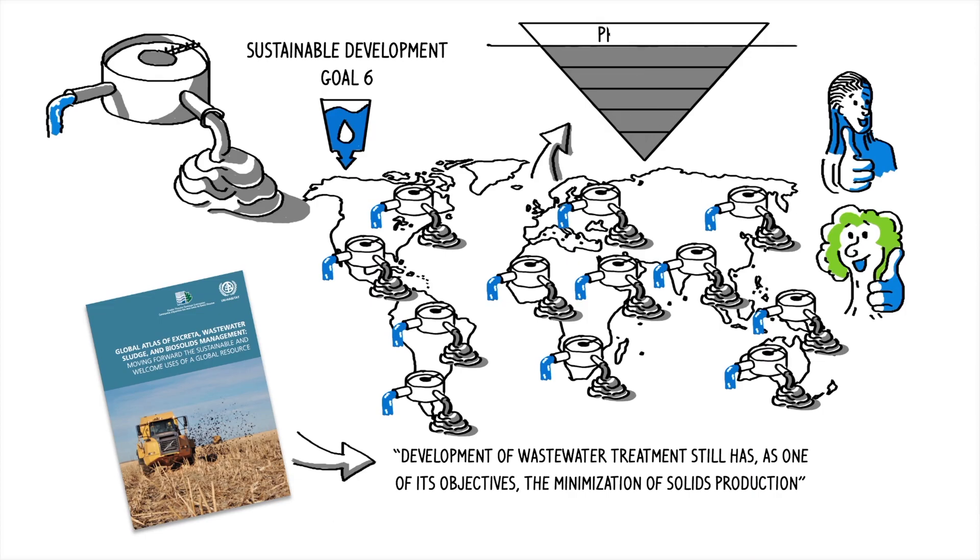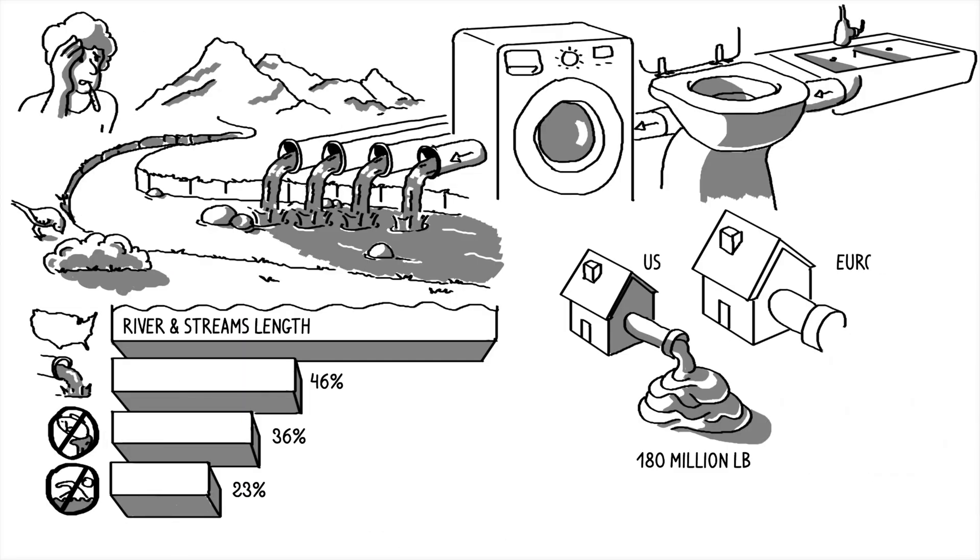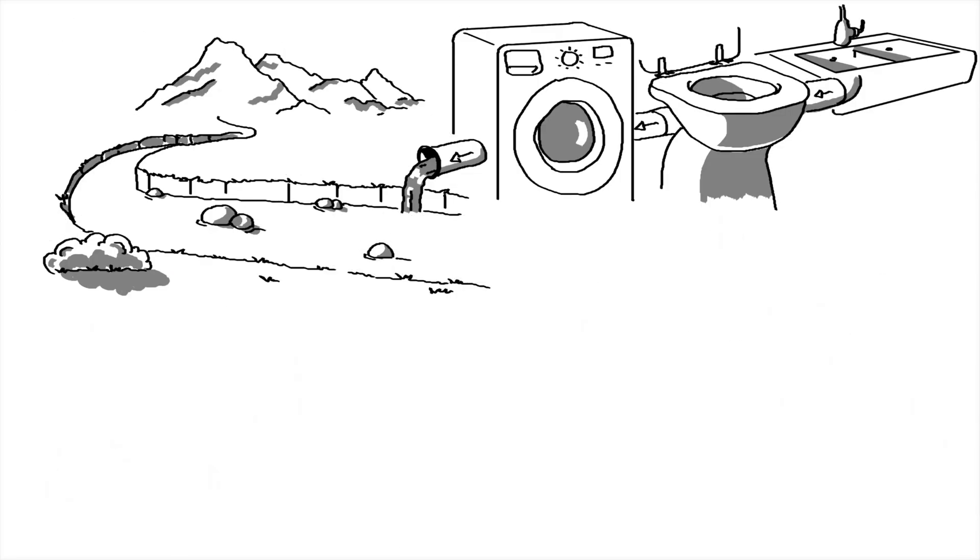Drylite's mission is to flip the waste conversation and the waste equation on its head. We prevent sludge production by boosting nature's processing power.